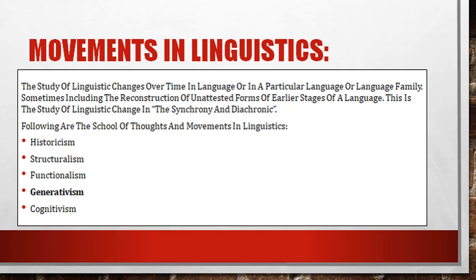The five schools of thought are: Historicism, Structuralism, Functionalism, Generativism, and Cognitivism. These five are the schools of thought — the movements — that we use in language and linguistics.